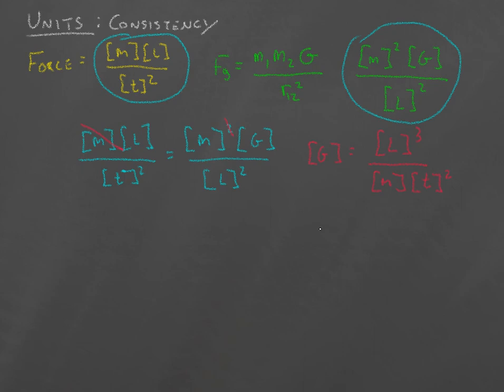But it's also useful to check our answers. For example, we know that energy has units mass times length squared divided by time squared. So let's say I'm actually working out an equation and I'm trying to calculate an energy. And I get something that looks like E is one half m squared v squared.